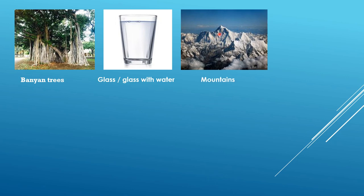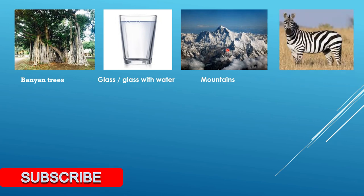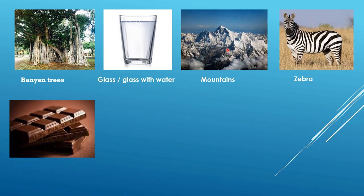Next is mountains — m-o-u-n-t-a-i-n-s. There is more than one mountain so you say mountains. Next one is zebra — z-e-b-r-a. If there is more than one zebra, you can say zebras.